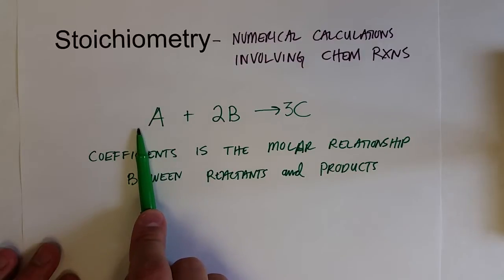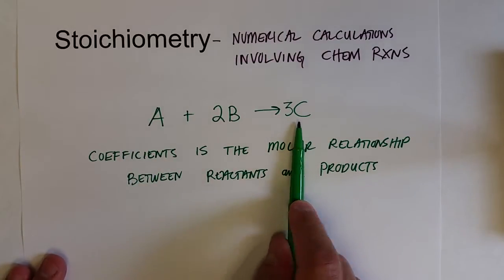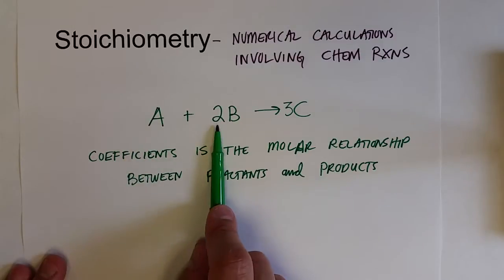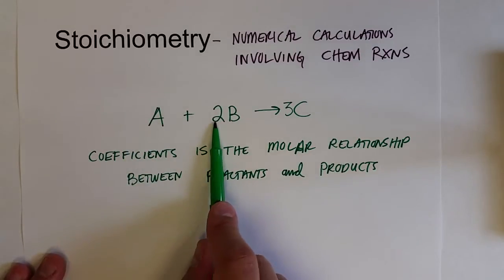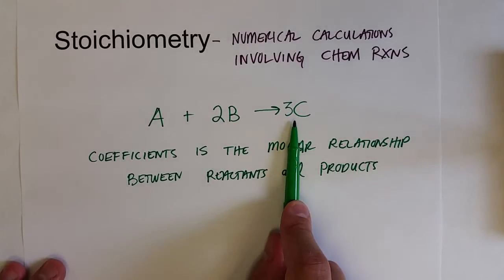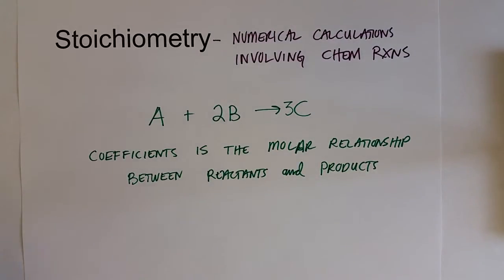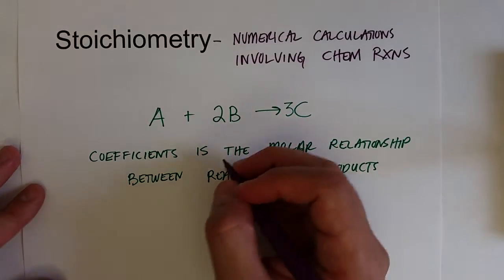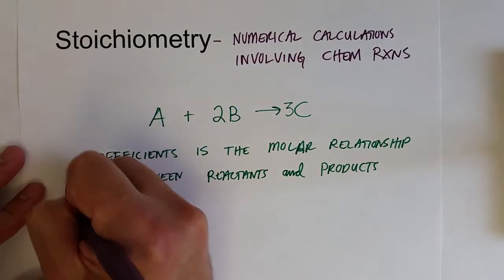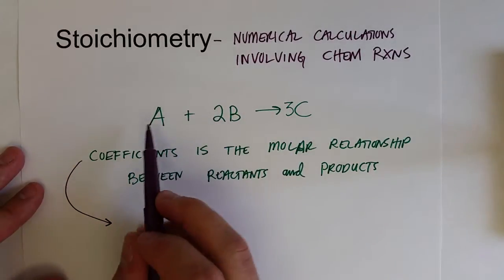Using this relationship as conversion factors, we can ask questions like: if I want to make 25 grams of a product, how much of the reactants do I need to start with? Or: I have so much of a reactant — how much product can I make? That is essentially what stoichiometric calculations give us the ability to do.